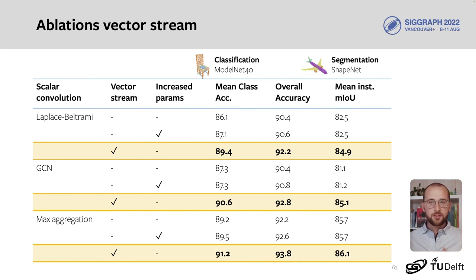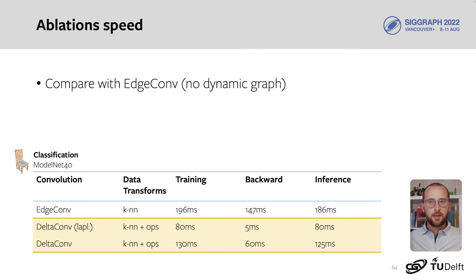Finally, we evaluated the runtime of DeltaConv compared to a very similar, seemingly simpler operation, EdgeConv. To our surprise, DeltaConv was actually much faster than EdgeConv. Note that we don't use any of the dynamic graph components from DGCNN.